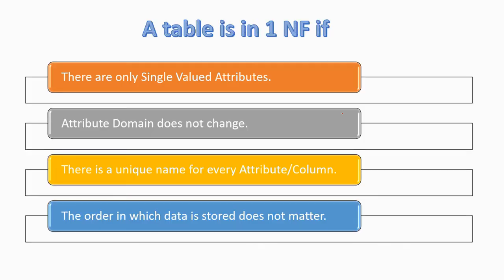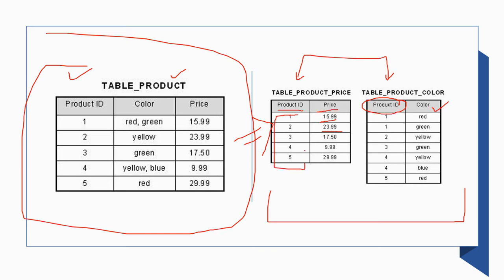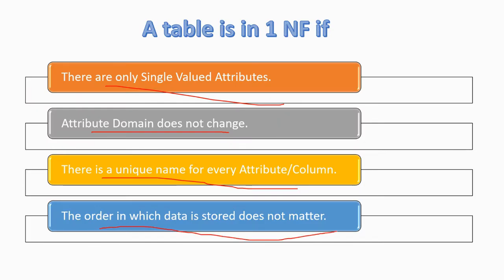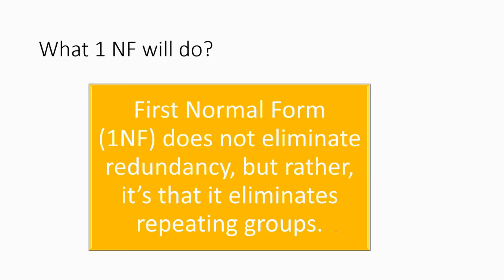A table is in first normal form if there are only single valid attributes, attribute domains do not change, there is a unique name for every attribute column, and the order in which data is stored does not matter. After applying 1NF, redundancy is reduced — it eliminates duplicates, but it does not fully eliminate repeating groups. For that, we move on to the second normal form.